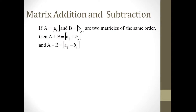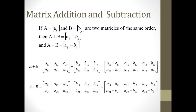Our first two matrix operations are addition and subtraction. In order to add or subtract matrices, they must have the same order — that is, the same number of rows and columns — and the result will be a matrix of the same order. If they have the same order, then we add matrices by adding corresponding elements, so A sub ij just gets added to B sub ij. Likewise, to subtract two matrices, we subtract corresponding elements. Here you can see an example of defining addition and subtraction for two general 2 by 3 matrices.